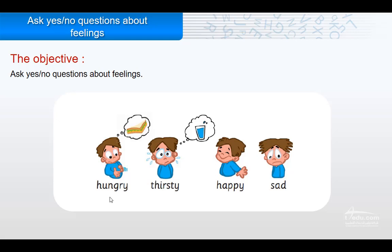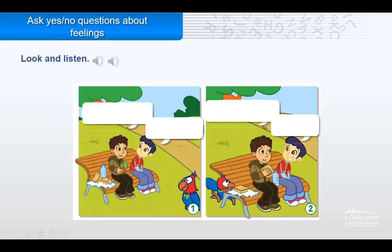If you want to eat something, you say 'I'm hungry.' Now let's look at the vocabulary: hungry, thirsty, happy, sad. Sad, happy, thirsty, hungry.